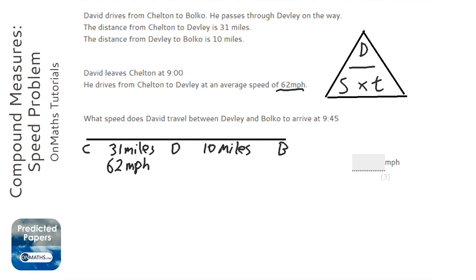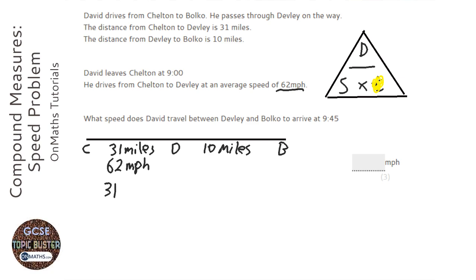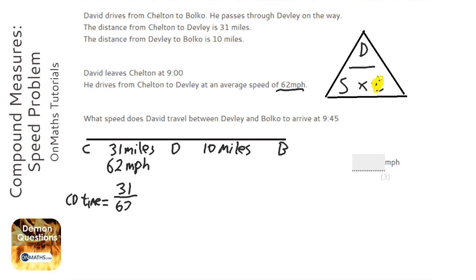So the first one, we're looking for the amount of time it's going to take. I'm going to cover up the time, and it tells me it's going to be distance divided by speed. So the distance is 31 — the CD time is going to be 31 divided by the speed. And 31 over 62, if I divide them both by 31, that becomes a half. So it's half an hour.